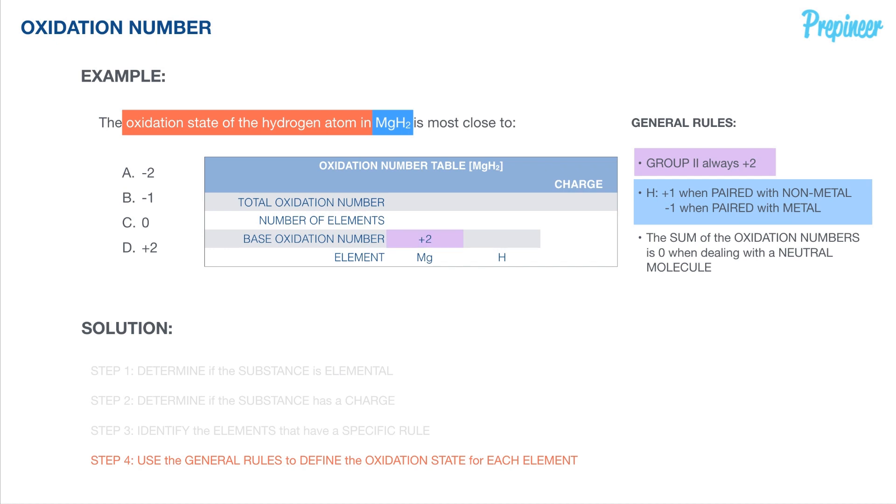Now, the base oxidation number for magnesium is plus two because that's a group two metal. And we know that group two metals, our rule of thumb is they are always plus two. We know we have one of those elements in our molecular formula, and we know we have a total oxidation number of plus two. So if there's a single element and the base oxidation number is plus two, then that means the total oxidation number of the magnesium atom or element within this compound will be plus two as well.